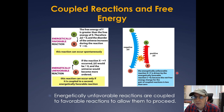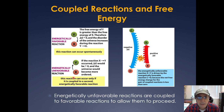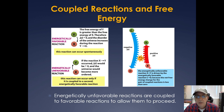Cells actually couple reactions to create useful work. There are energetically favorable reactions where delta G is less than zero — these occur spontaneously, converting Y to X. There are also energetically unfavorable reactions where X needs to be converted back to Y, with delta G greater than zero — these only occur if coupled to a second energetically favorable reaction. Reactions with a negative delta G can drive a non-spontaneous unfavorable reaction.